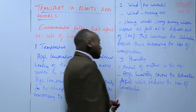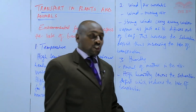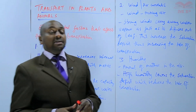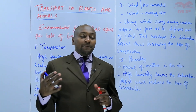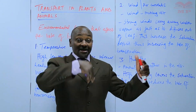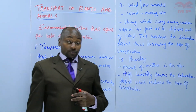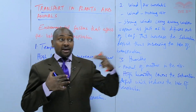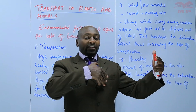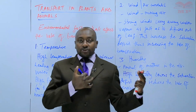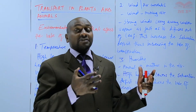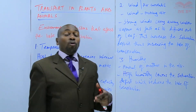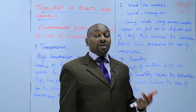Saturation deficit simply means the moisture difference between the atmosphere and the inside of the leaf. If there is a very big difference between the moisture in the air and that inside the leaf, then there is a high rate of transpiration. But if the saturation deficit is low — meaning they have almost the same moisture level — then the rate of transpiration will be reduced.